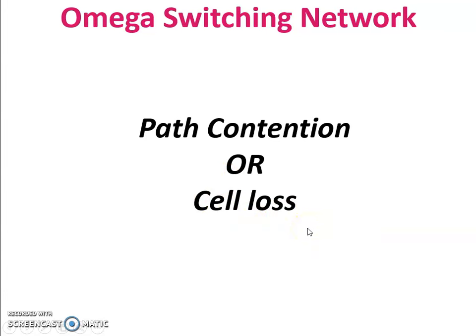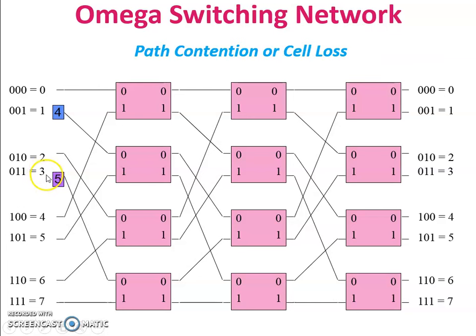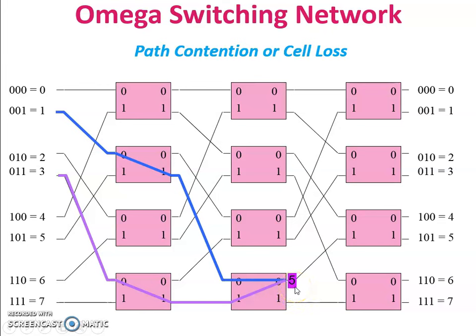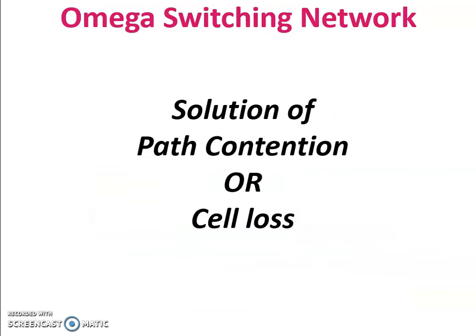Path contention or cell loss is a disadvantage of the omega switching network. Sometimes two cells arrive simultaneously and pass through one switch to the next level switch — at that time a conflict arises and one cell is lost. For example, destinations 4 and 5 come from different sources. Binary of 4 is 100 and binary of 5 is 101. At the middle level switches, both conflict at output 00. Since 5 is the higher number, it wins and 4 is lost. Five is forwarded and reaches its destination. This is called path contention or cell loss.